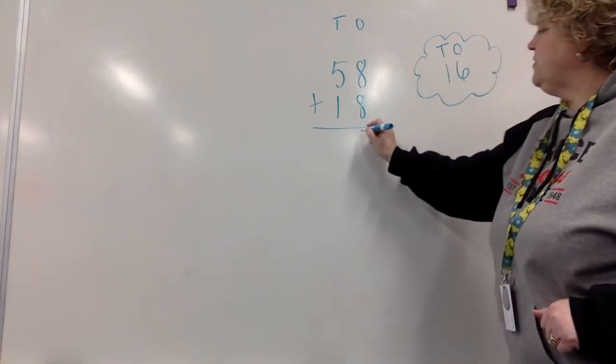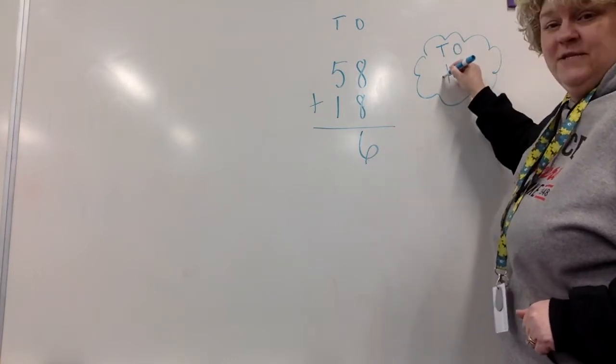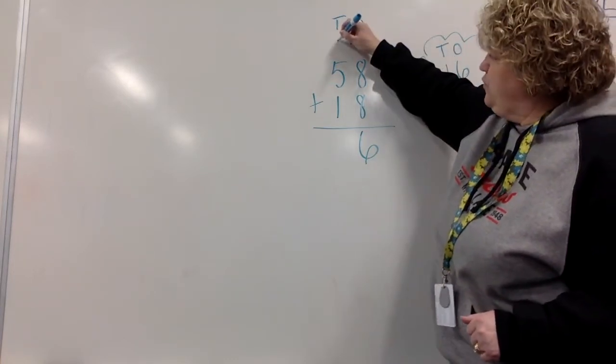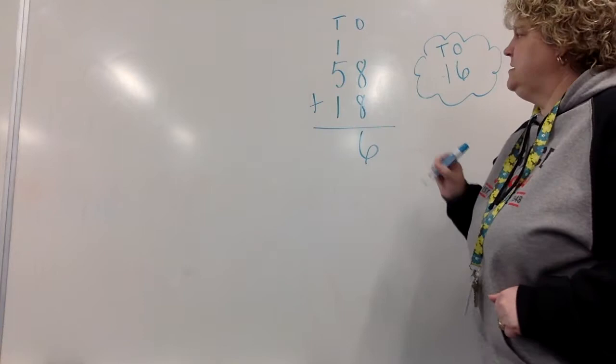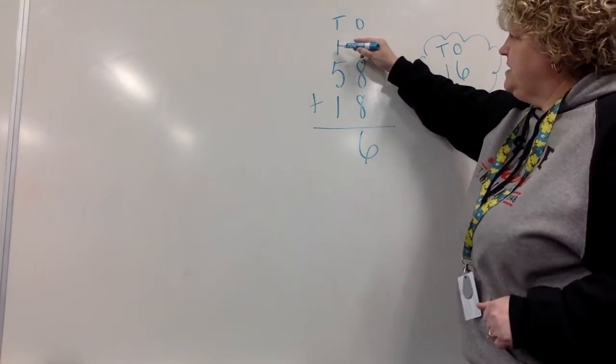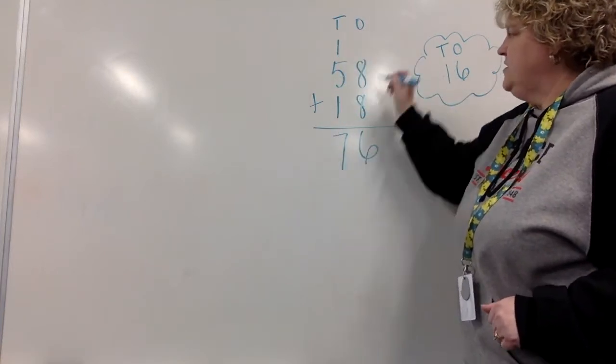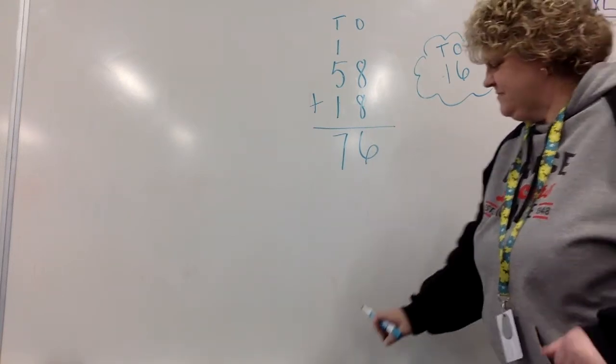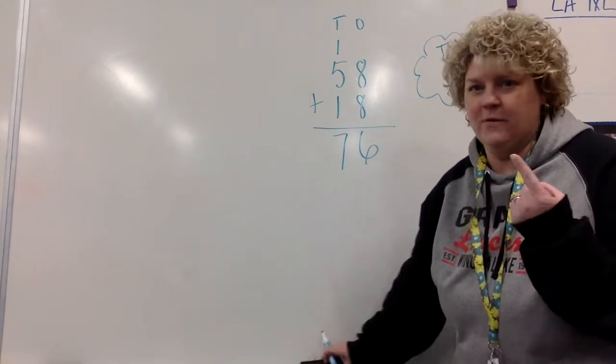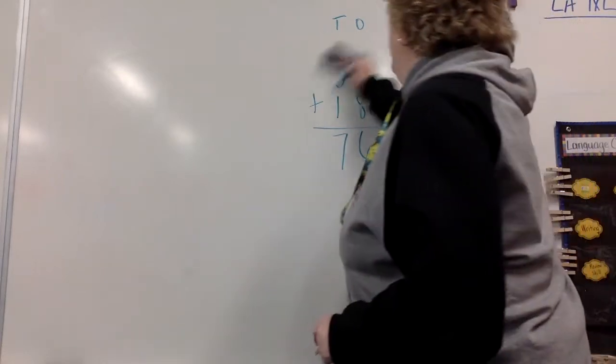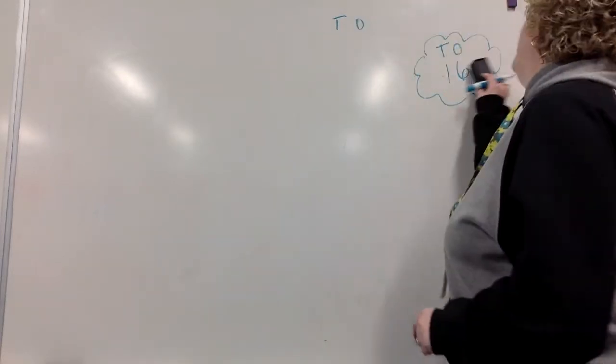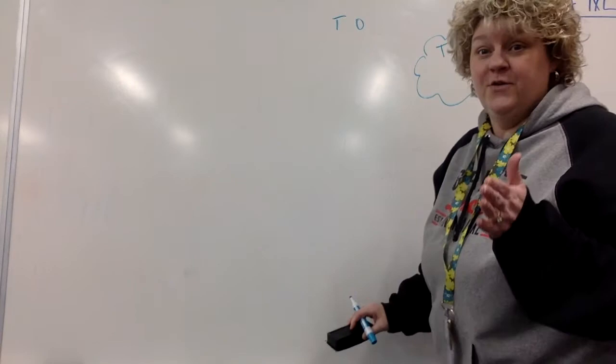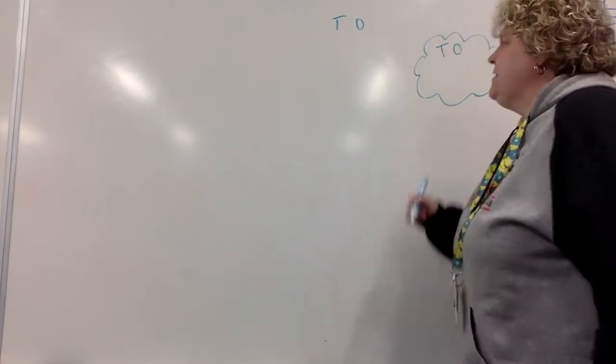Double facts. 8 plus 8 we know is 16. We know in the 1s place, we're going to write a 6. And in the 10s place, we're going to take that group of 10 and we're going to regroup it up here into the group of 10. Now we're going to say 5 plus 1 is 6 and one more is 7. So 58 plus 18 equals 76. I can't stop there. I've got to do another one. Just one more. I can hear you laughing at me right now. But seriously, I've got to do another one. I can't help it. I love this math.